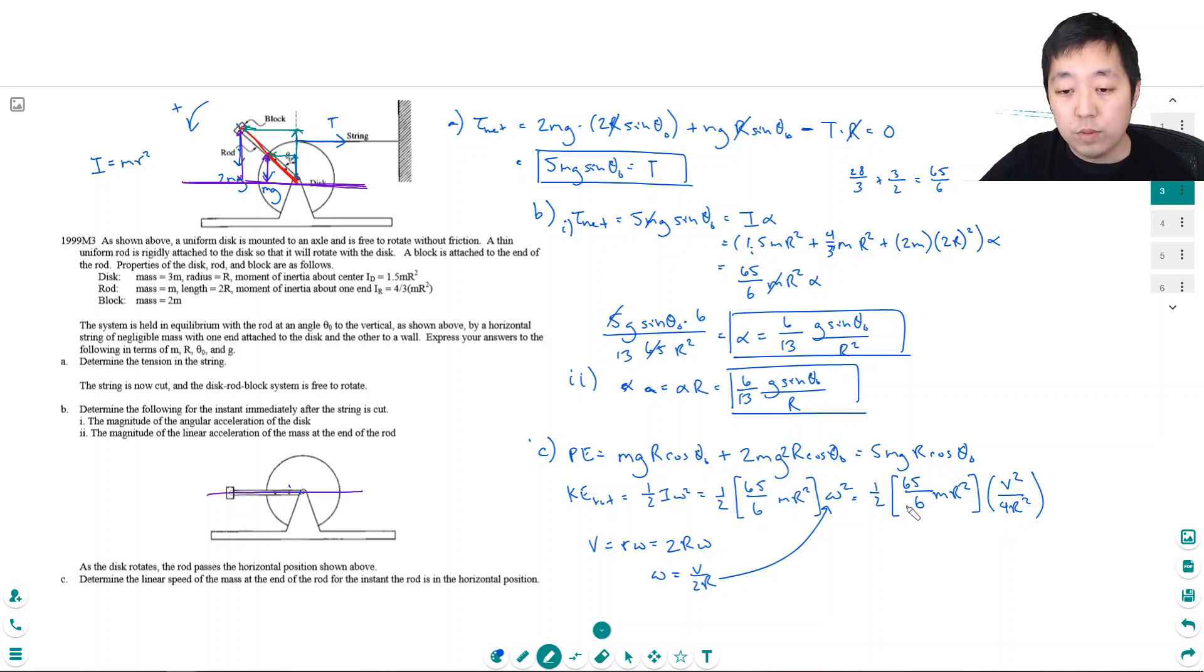So that's equal to 65 over 48. The R squareds actually cancel here. M V squared. So that's the kinetic energy that it will have. And that's equal again to all of this potential energy.